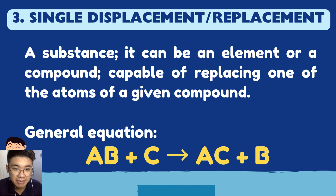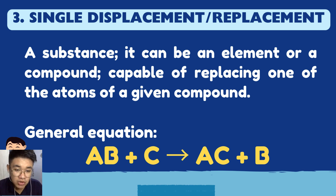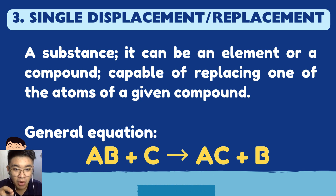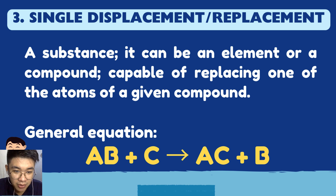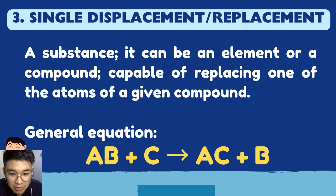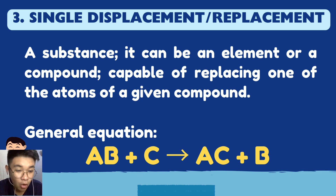The third reaction type is single displacement, also called single replacement. In this reaction, a substance — an element or compound — replaces one of the atoms of a given compound. The general equation is: AB + C → AC + B. Notice that C replaces B's position in the compound, so B is displaced out.